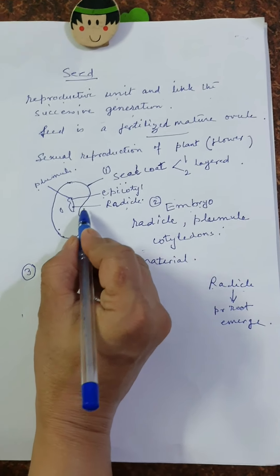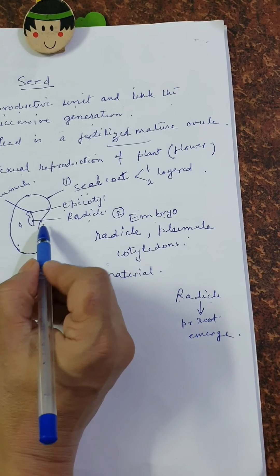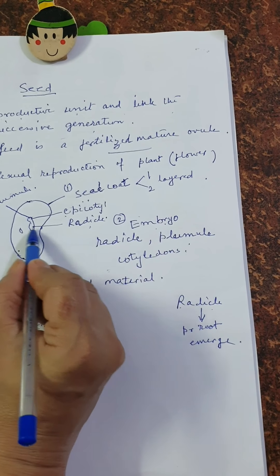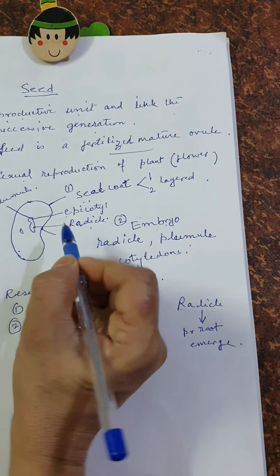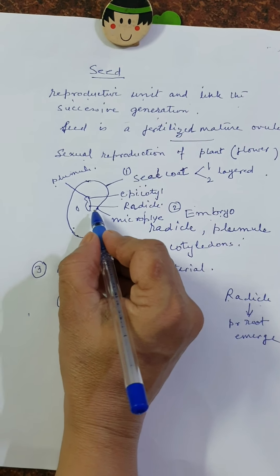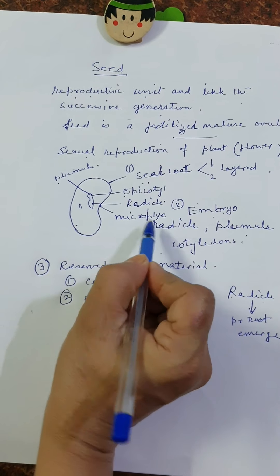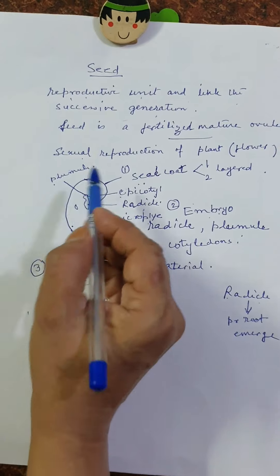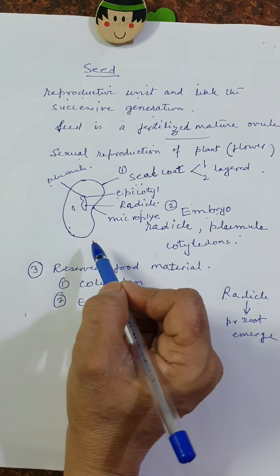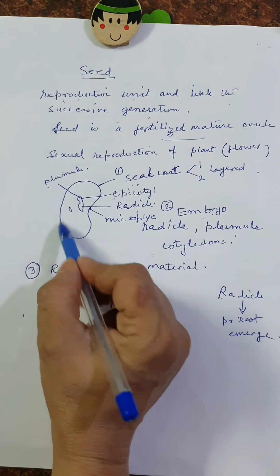One small pore found on the seed coat lies opposite to the tip of the radicle. At the time of germination, water enters through this pore. This structure is known as the micropyle. The micropyle is a tiny pore on the seed coat that lies opposite the tip of the radicle and permits water to enter the embryo through the embryonal axis.